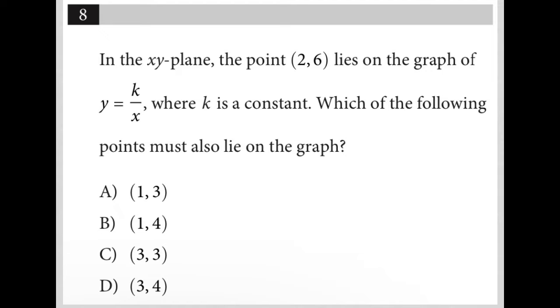This question says: In the xy plane, the point (2, 6) lies on the graph of y equals k over x, where k is a constant. Which of the following points must also lie on the graph?